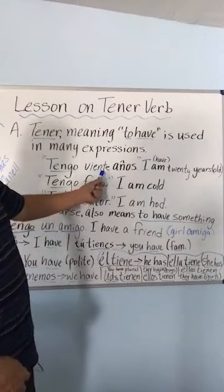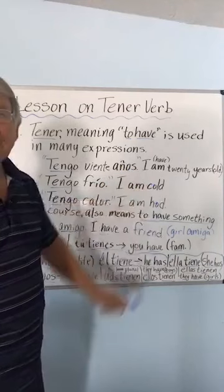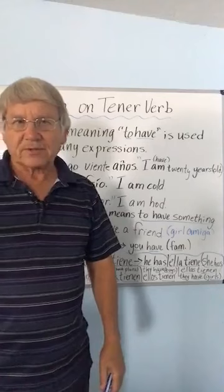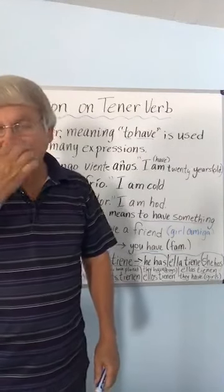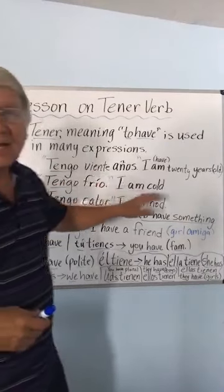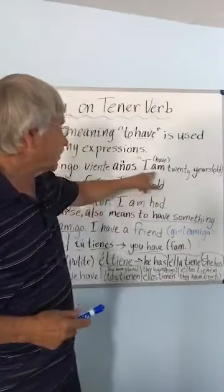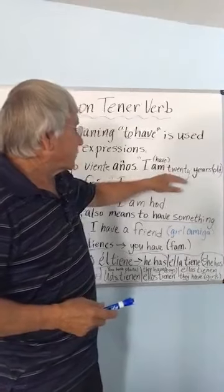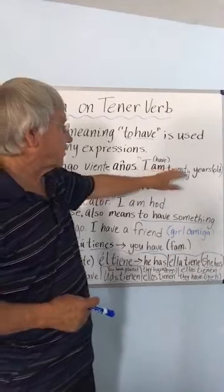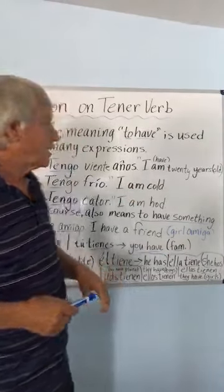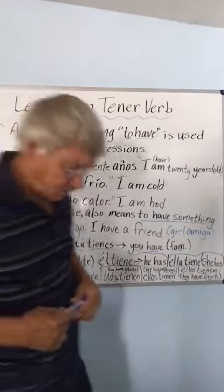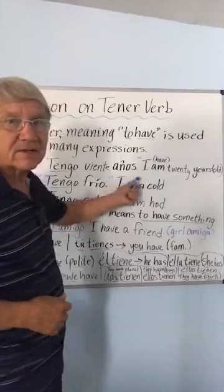Tengo veinte años. We learned about the numbers — uno, dos, tres, cuatro, cinco, seis, siete, ocho, nueve, diez, veinte — twenty. Tengo means 'I have' over here. In English we say 'I am twenty years old,' but in Spanish you have twenty years. So you say, tengo veinte años.